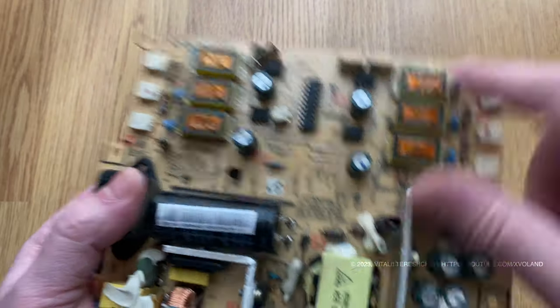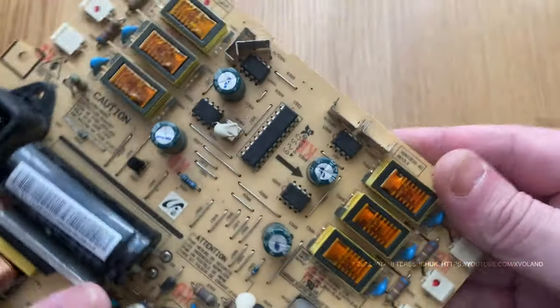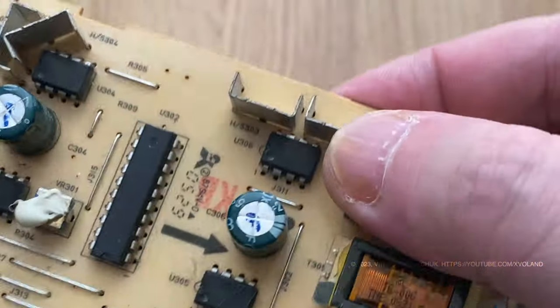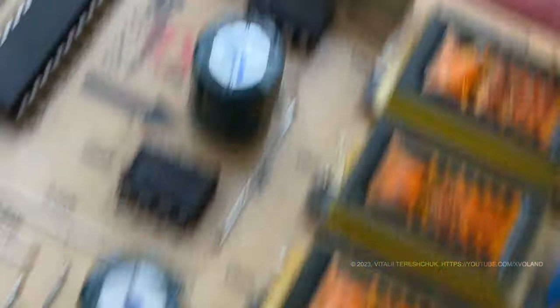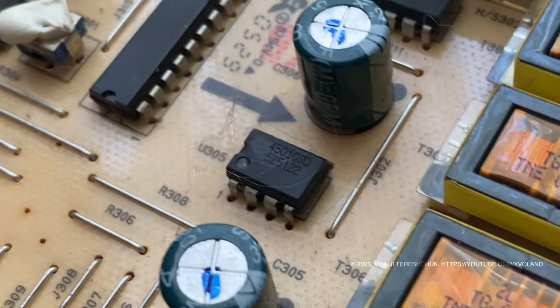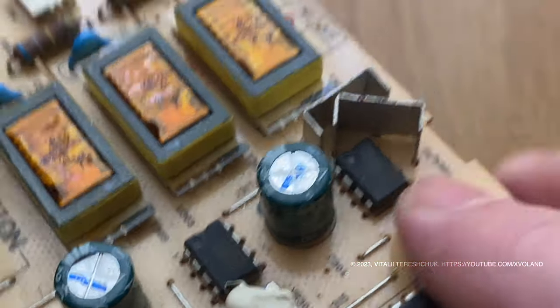Sometimes it can be challenging to find the name of electronics microchips. For instance, you can see them here and there, but other times it's tricky.